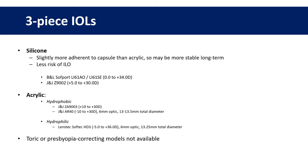All of these lenses listed have a 6mm optic and a 13mm total diameter, except for the AR40 which has a larger diameter of 13.5mm in the low-powered meniscus range — because these lenses are typically designed for larger myopic eyes — and the Softec range which has a total diameter of 13.25mm. Importantly, you can't get toric or multifocal three-piece lenses, so this may be a consideration.